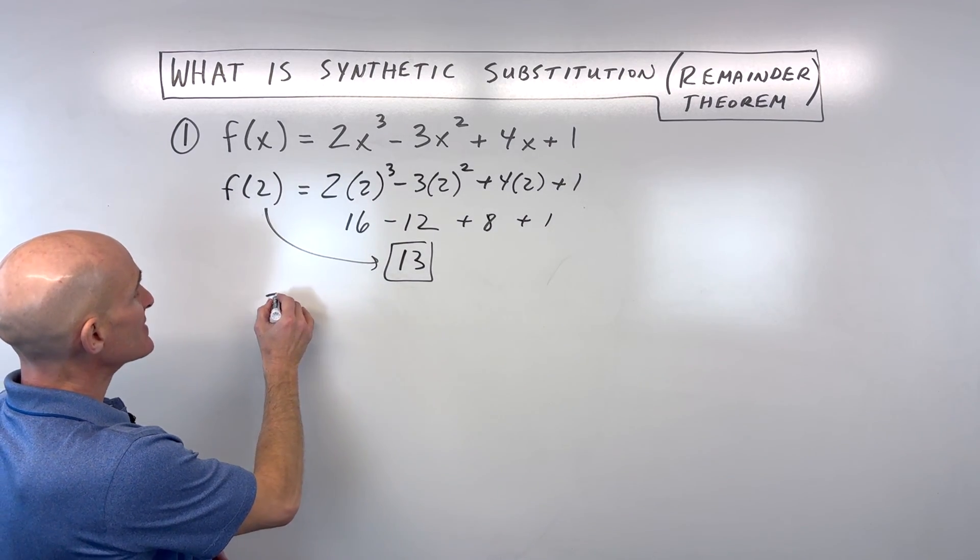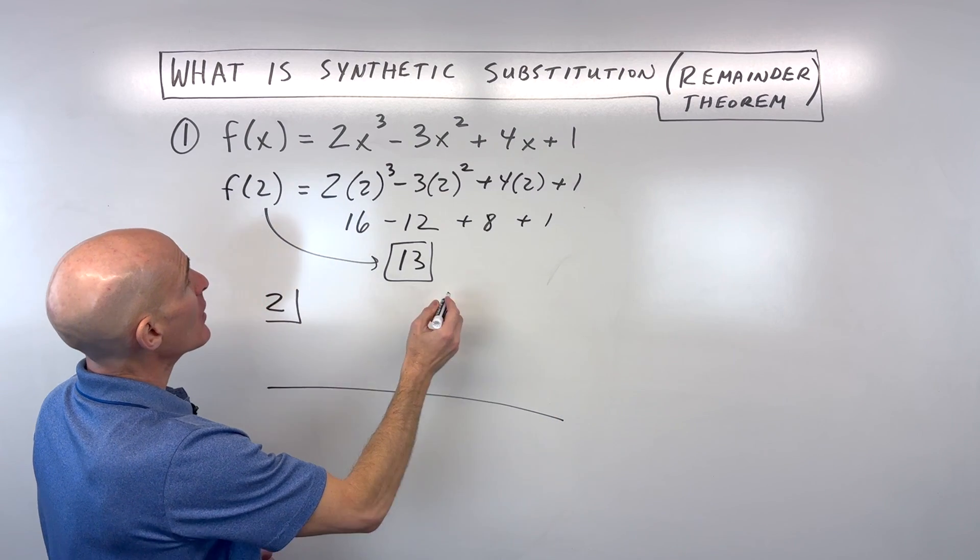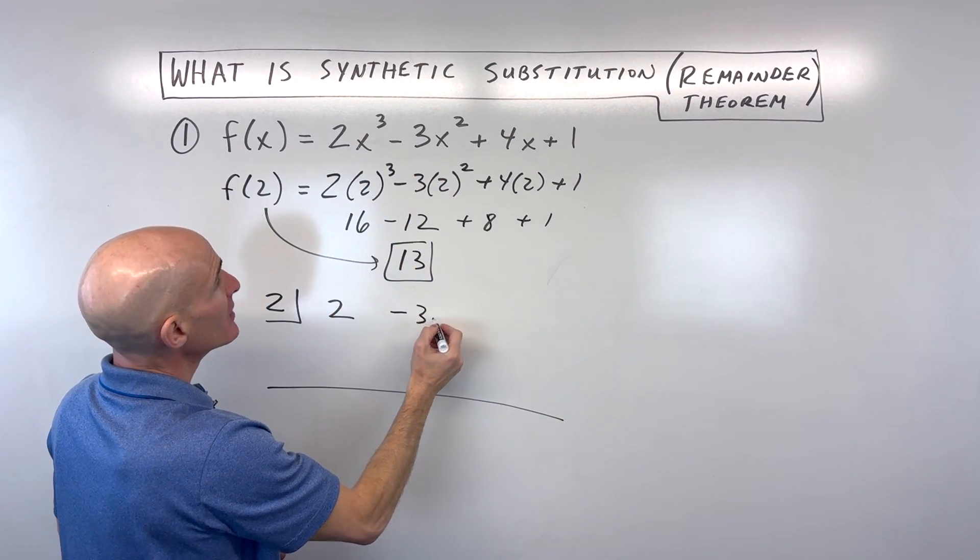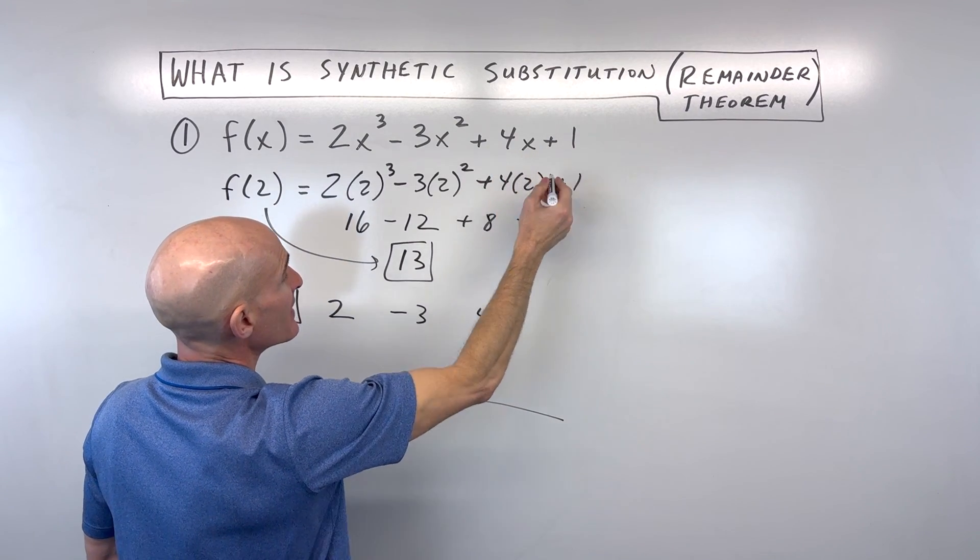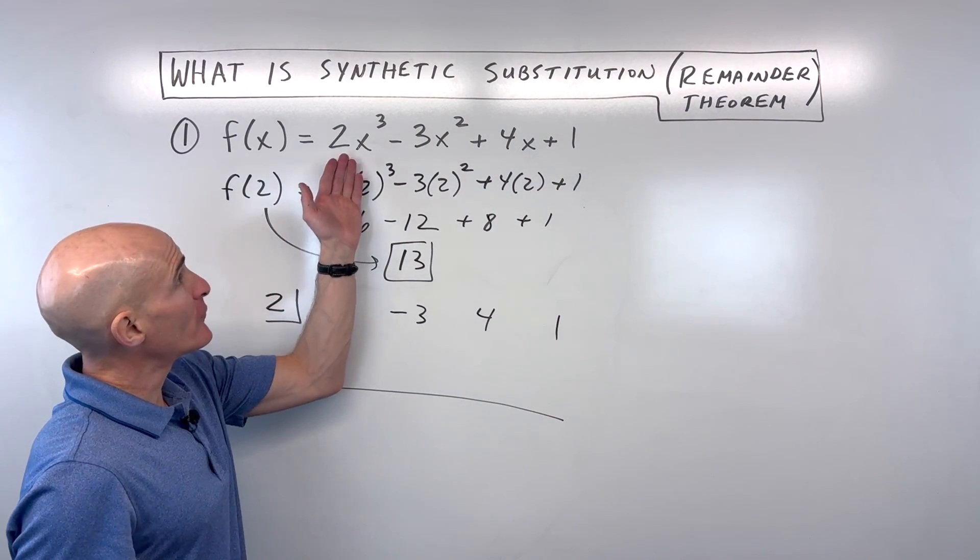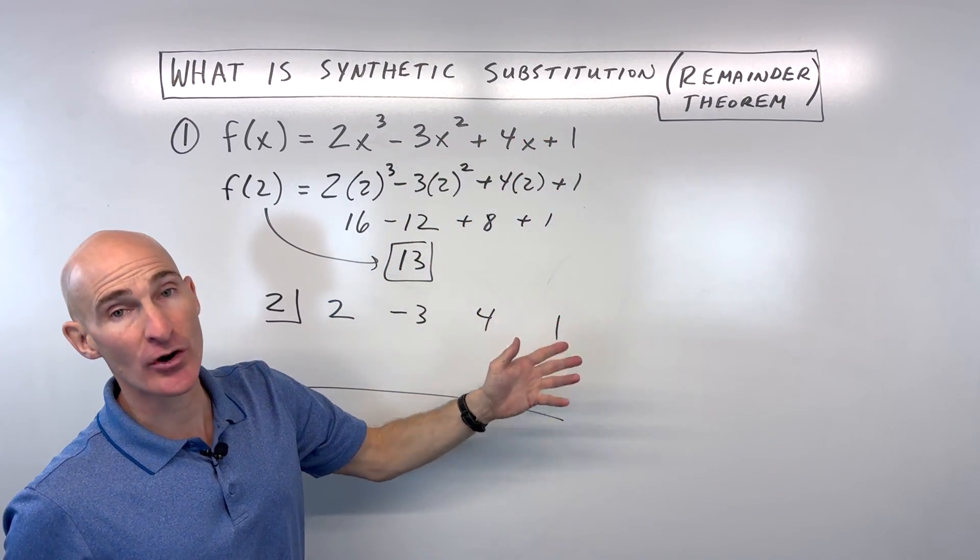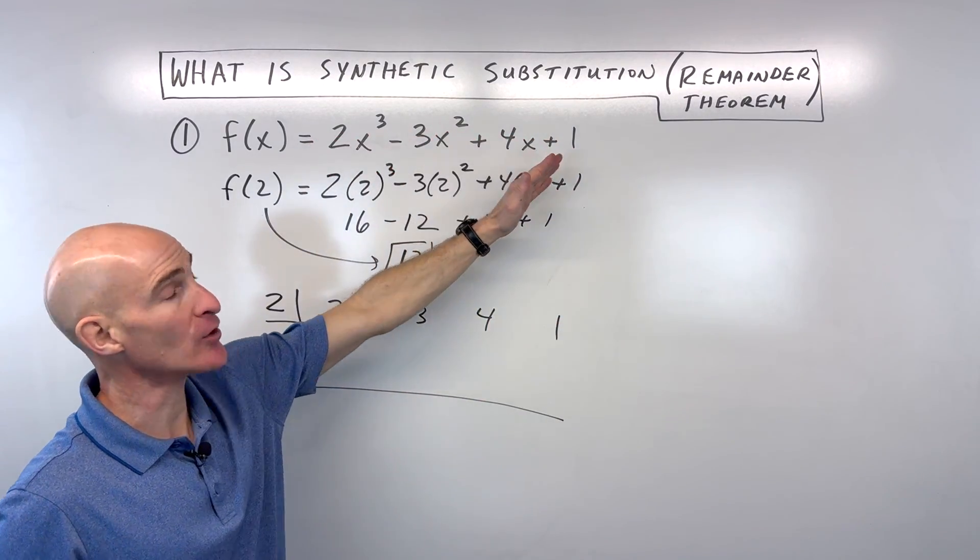Now what I want to show you is the synthetic substitution method. And what you're going to do is you're going to take the coefficients in front of our variables here, just like as if you were doing synthetic division. Remember, if you go from x cubed to x, you want to put a placeholder like a 0. Or if you're missing a constant, it would be 0. So you want to make sure it goes in descending order.